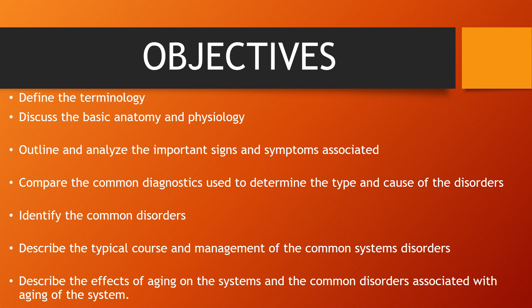Here you'll see the list of our objectives. I've taken away the specifics because we're going over so many different organs and systems within this particular short lecture. I just want you to know the terminology, basic anatomy and physiology, important signs and symptoms, diagnostic tests, and the most common disorders. For endocrine, one of the most common disorders is diabetes. We also want you to know the typical course and management for common disorders and the effects of aging on those organs and systems.